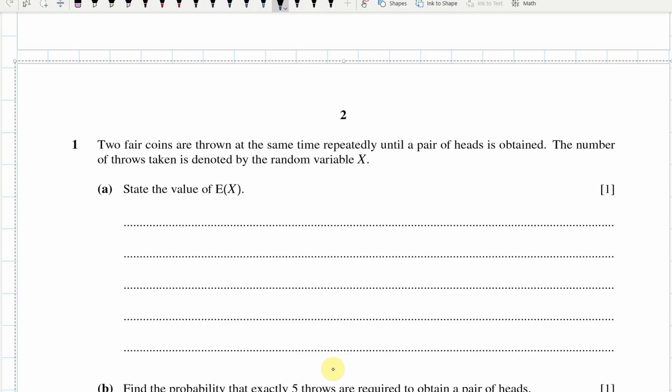Okay, so the first one, we've got some fair coins, and they're thrown repeatedly at the same time until a pair of heads is obtained. The number of throws is denoted by the random variable. As soon as you see this, you should be thinking geometric, hopefully.